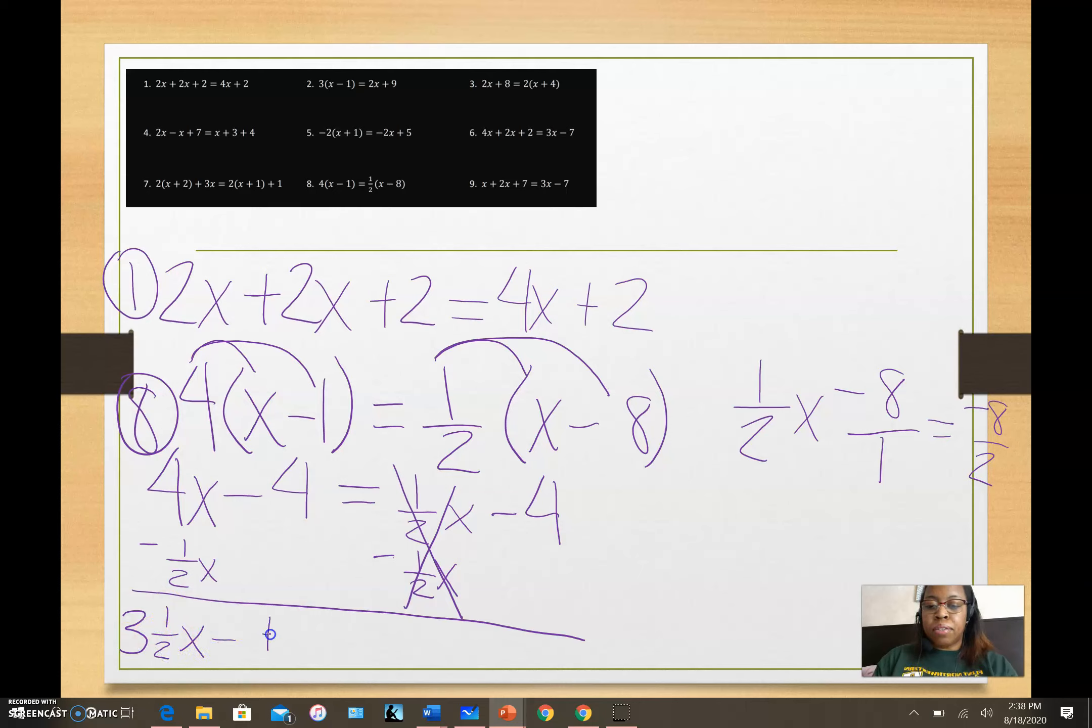This piece cancels. Four minus one half leaves me with three and a half x minus four equals minus four. The opposite of subtraction is addition, so that cancels. I have three and a half x equals zero. Well, the only time that could be true is when x equals zero. So once again we have a one solution problem.